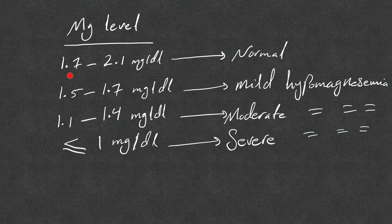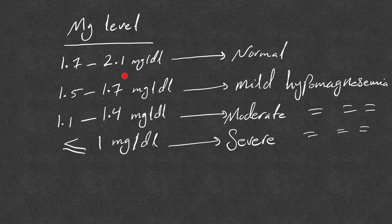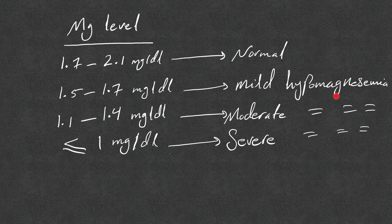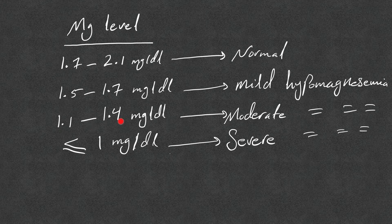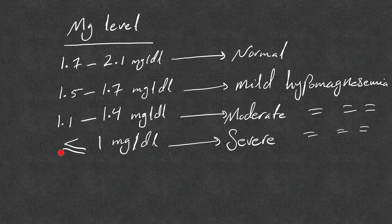Normal magnesium level is 1.7 to 2.1 milligrams per deciliter. You may find other sources indicating slightly higher or lower values of normal magnesium. For severity, I'm considering mild hypomagnesemia if magnesium is 1.5 to 1.7, moderate 1.1 to 1.4, and severe hypomagnesemia is equal or less than 1 milligram per deciliter. Other sources may define the severity and normal magnesium level using different numbers, but it will be close to these numbers.